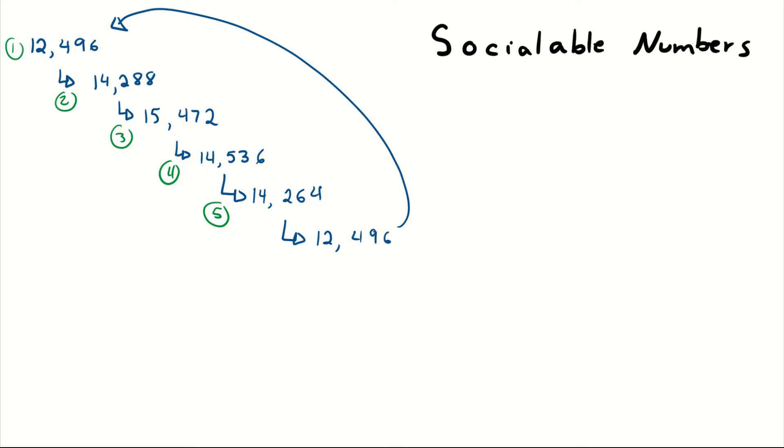Sociable numbers are numbers where the sum of the divisors have a cycle bigger than two. Okay, so they have a cycle of three or more. In fact, sociable numbers are part of a bigger thing called the aliquot sequences. Aliquot sequence is defined as a sequence where each term is the sum of proper divisors of the previous term.